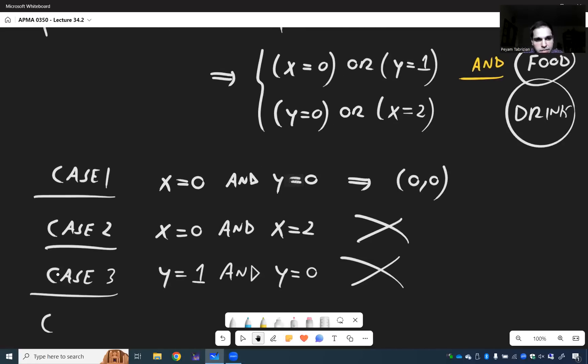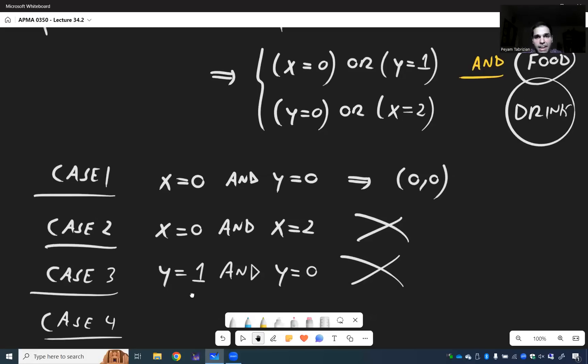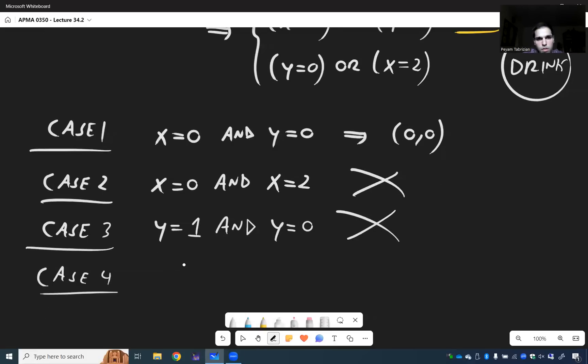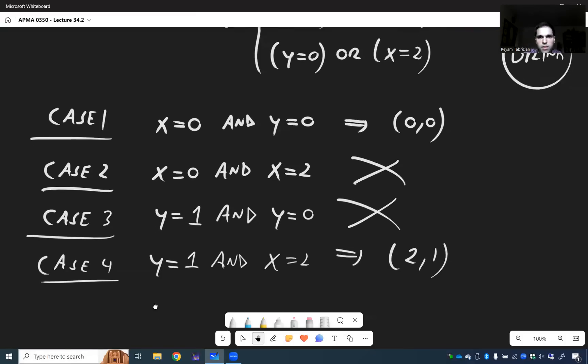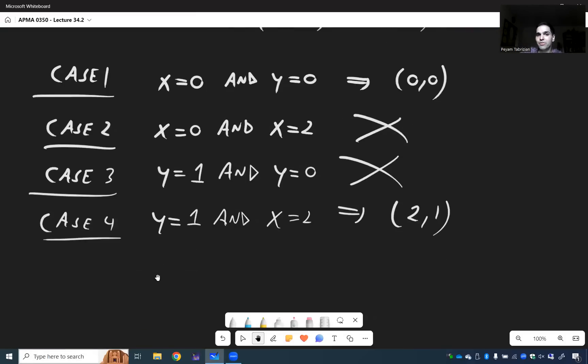Or last but not least, case 4, y equals 1 and x equals 2, which would give you the equilibrium point 2, 1. Again, careful, because x comes first and then y.